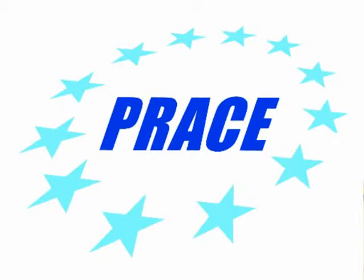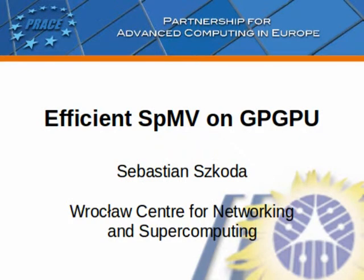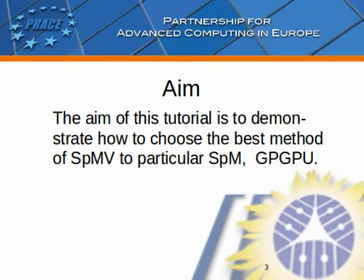The following tutorial was done as part of the PRACE IP3 project. The title is: Efficient Sparse Matrix Vector Multiplication on General Purpose Graphic Processing Units. The aim of this tutorial is to demonstrate how to choose the best method of sparse matrix vector multiplication for a particular sparse matrix, assuming that calculations are based on general purpose graphics processing units.